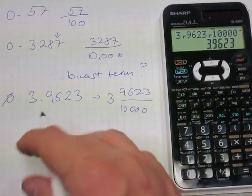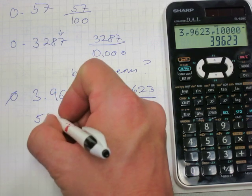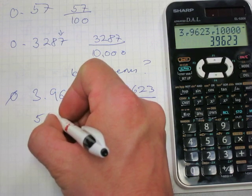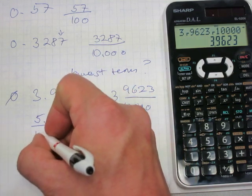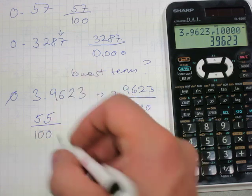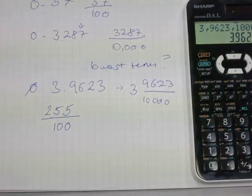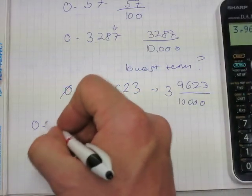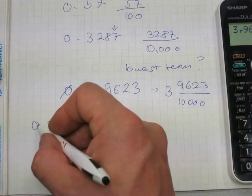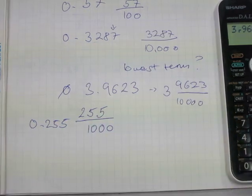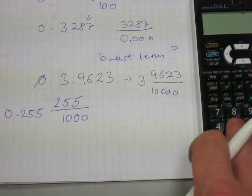Some fractions though can be simplified with the calculator to lowest terms. How about 255 over 1,000, which is the same as 0.255. Let's see what we can do about that one.